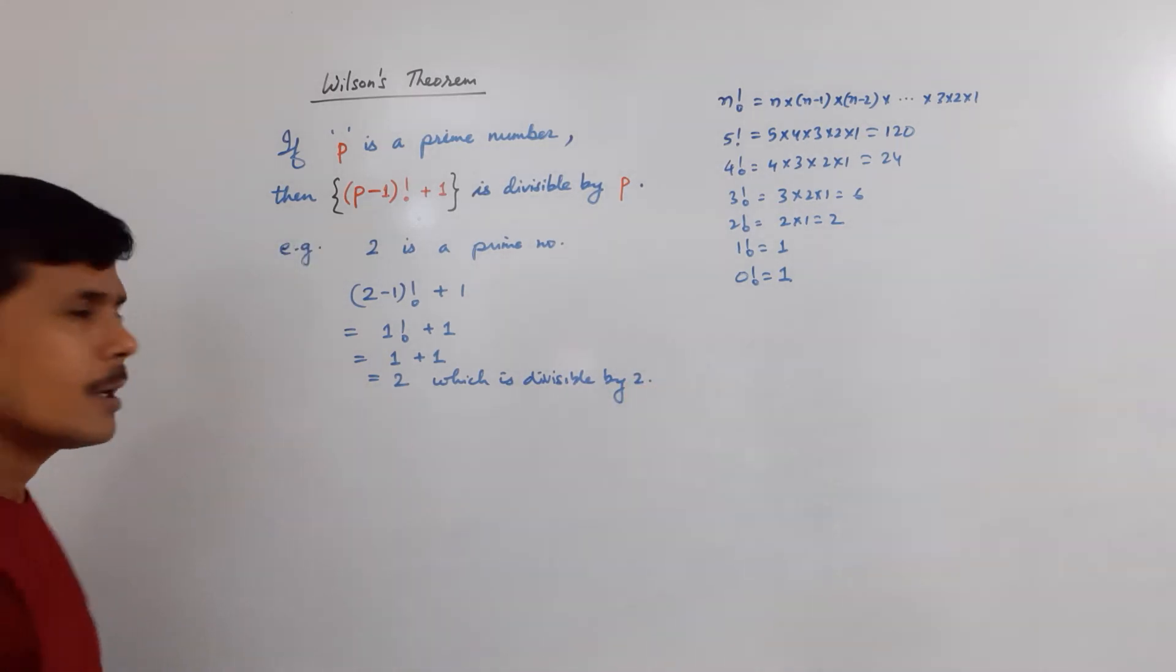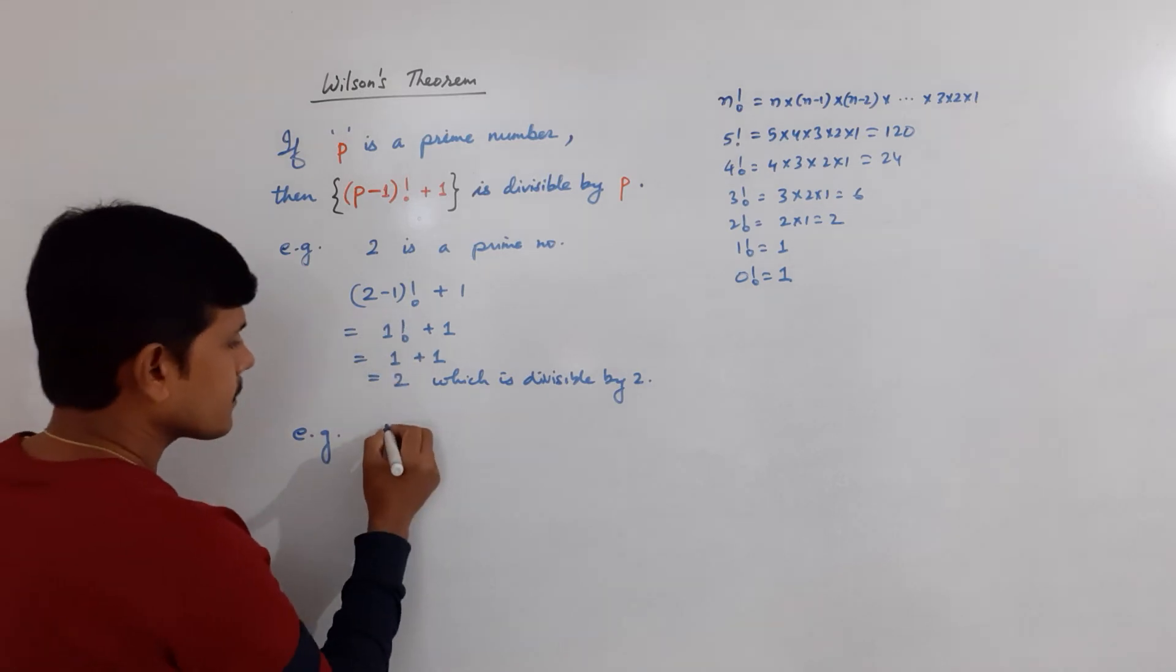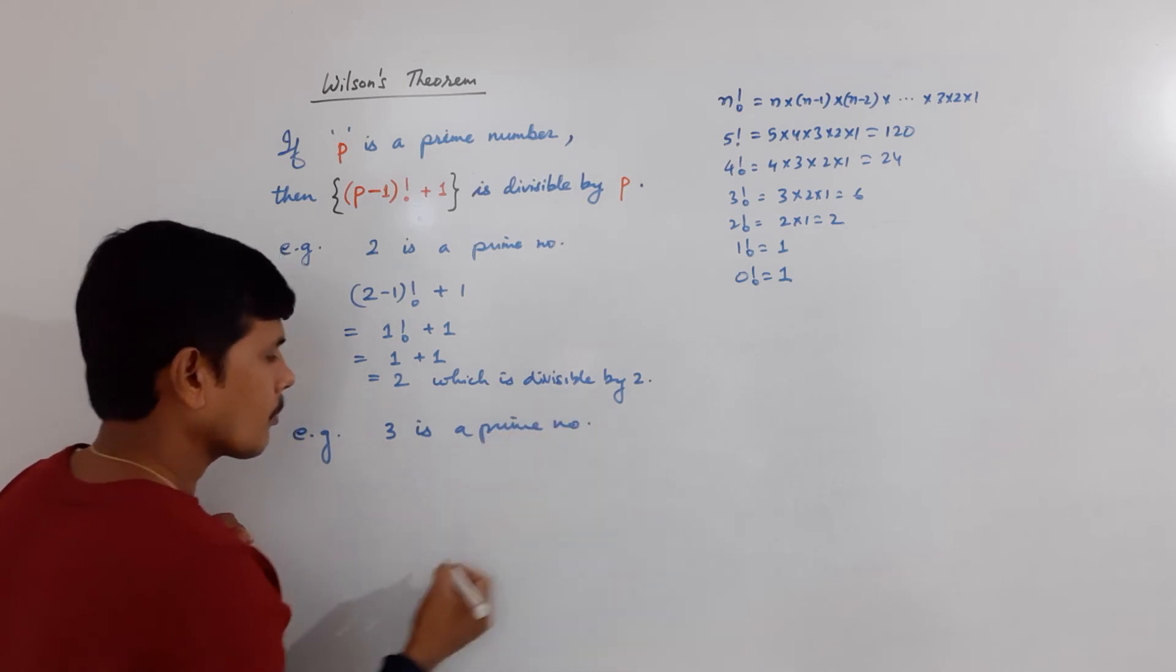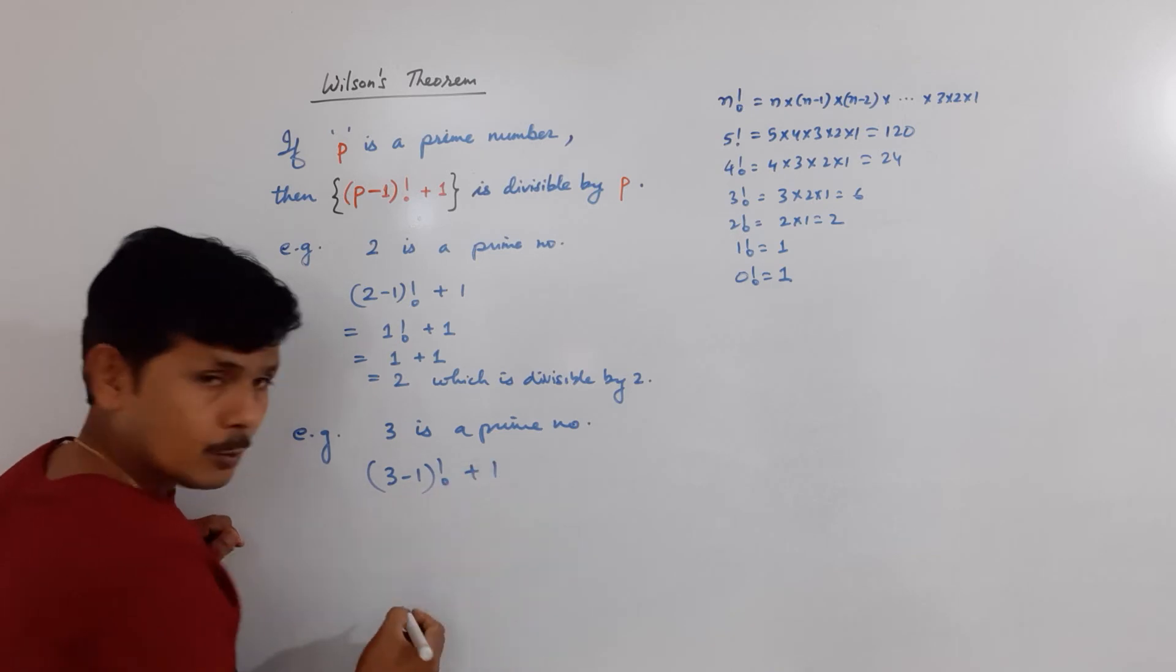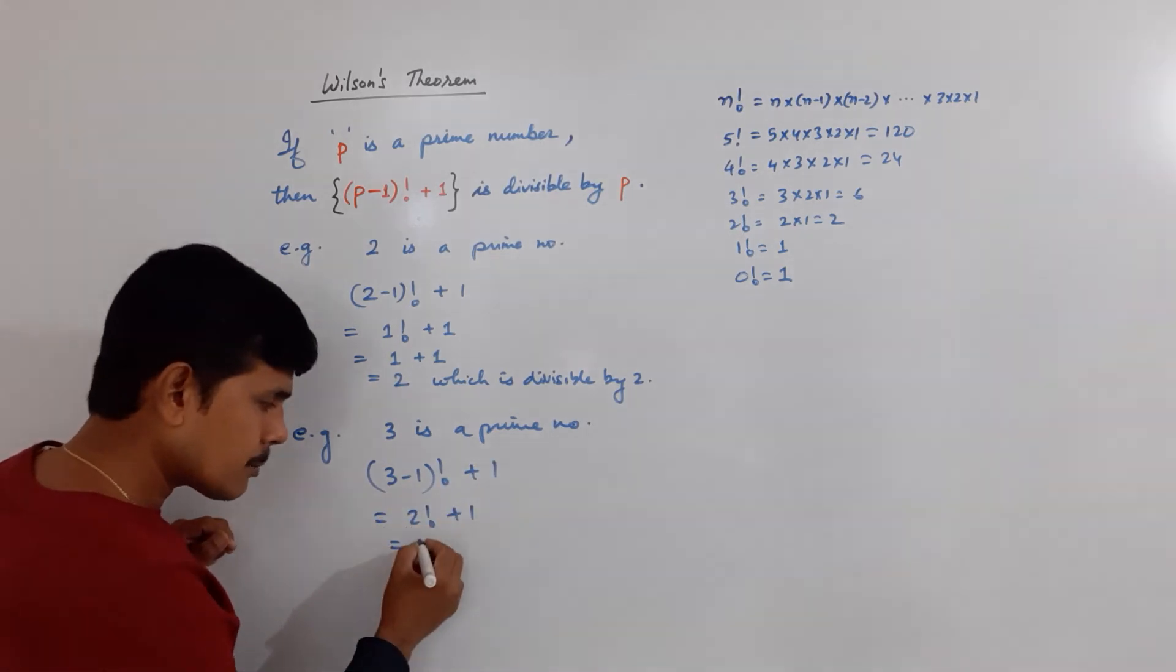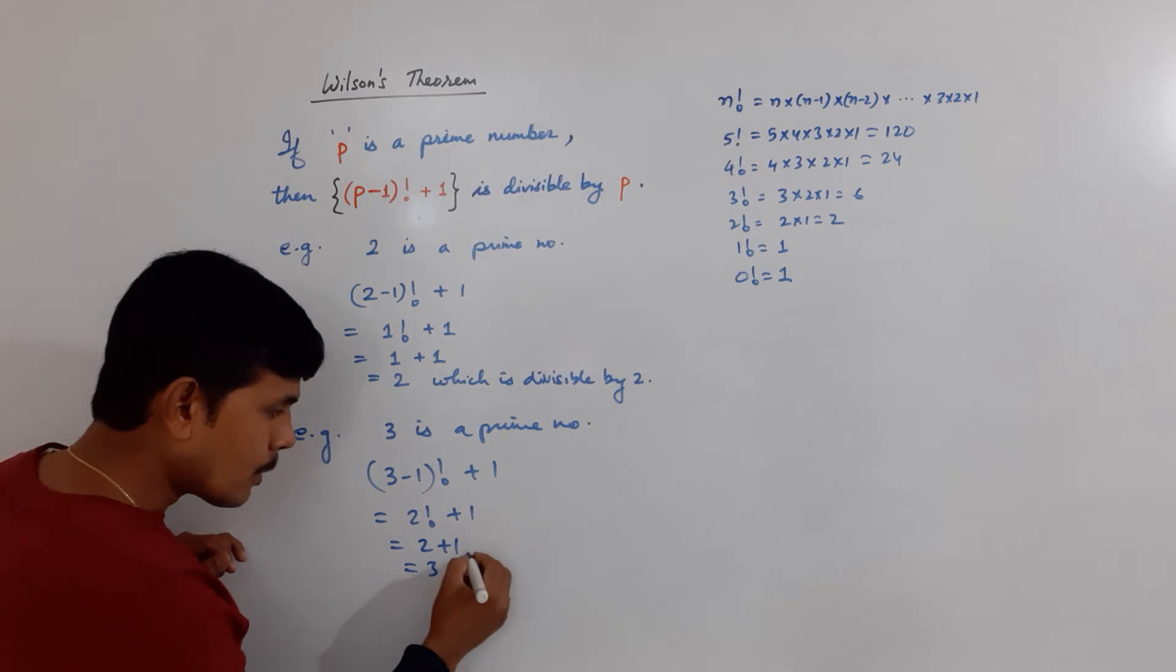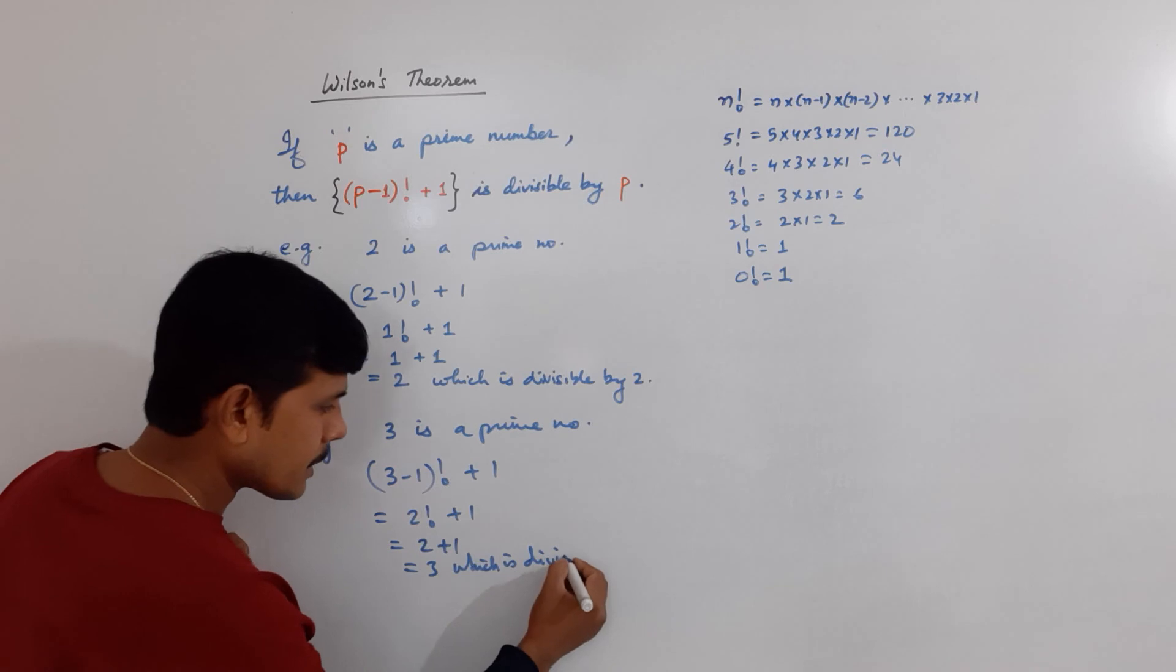So far, so good. Let us proceed with another example. Let's say 3. 3 is the prime number. So, 3 minus 1 factorial plus 1. What will I get? 3 minus 1 means 2 factorial plus 1. 2 factorial means 2. This is 2 plus 1, which is 3, which is divisible by 3, by the prime number what we have taken.